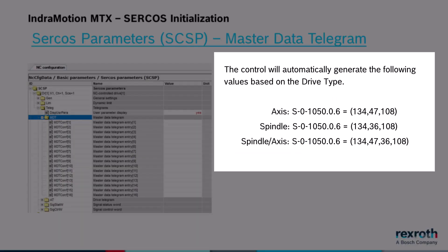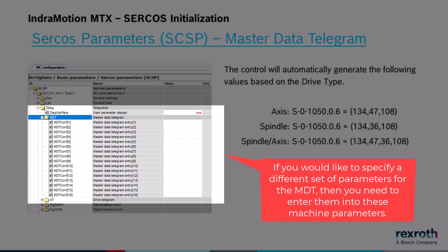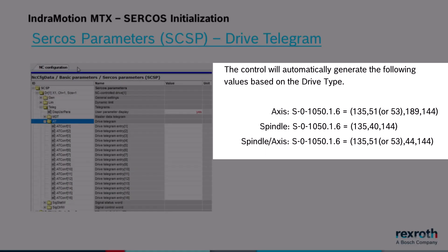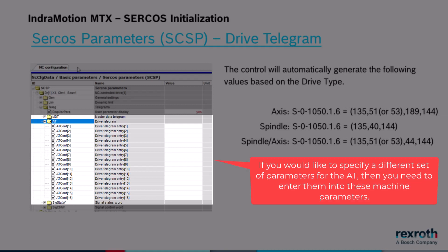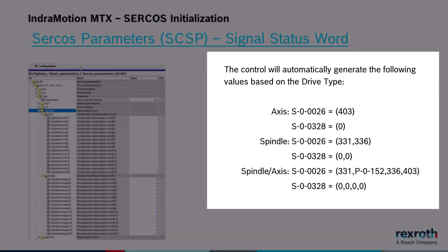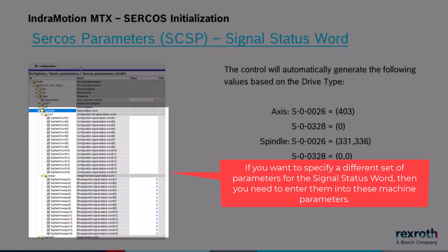Based on the drive type, the control will automatically generate the following values for the master data telegram. If you want to specify a different set of parameters, then you need to enter them into these machine parameters. Based on the drive type, the control will automatically generate the following values for the drive telegram. If you want to specify a different set of parameters, then you will need to enter them into these machine parameters. Based on the drive type, the control will also automatically generate the following values for the signal status word. If you want to specify a different set of parameters for the signal status word, then you need to enter them into these machine parameters.